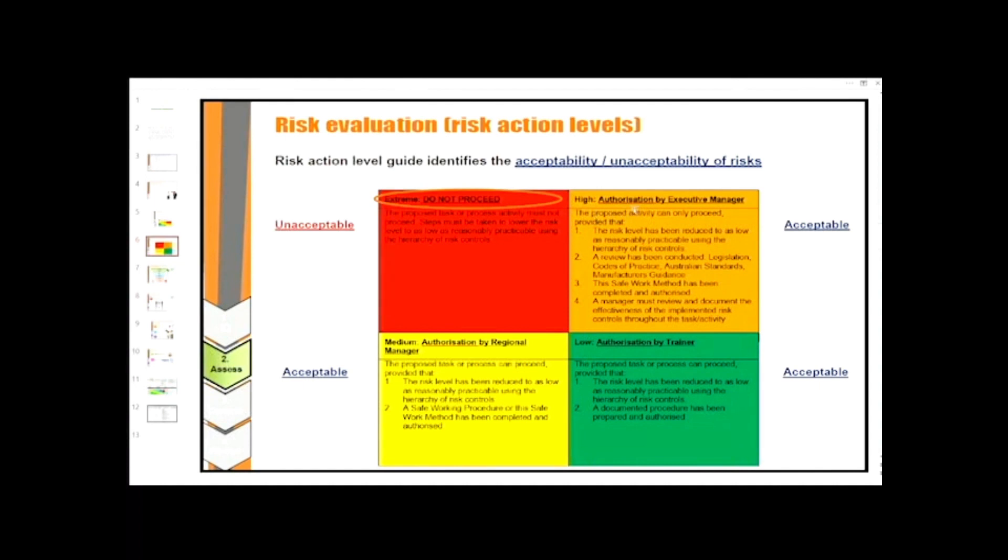If the level is high, the proposed activity can only proceed provided that the risk level has been reduced to as low as reasonably practicable using the hierarchy of risk controls. A review has been conducted of legislation, codes of practice, Australian standards, and manufacturer's guidance. This Safe Work Method has been completed by and authorized by a manager, and must review and document the effectiveness of the implemented risk controls throughout the task and activity.